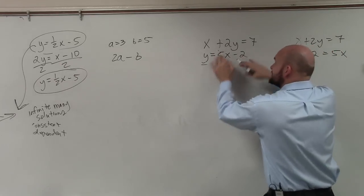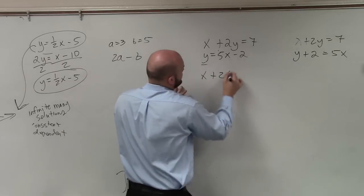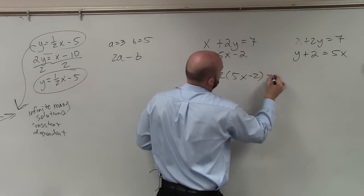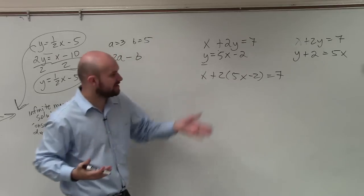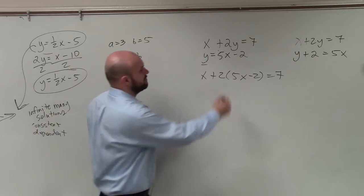But what we do is we take this, plug it into the other one. So x plus 2 times 5x minus 2 equals 7. Now I have an equation with only my x. I can apply the distributive property.